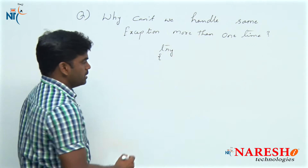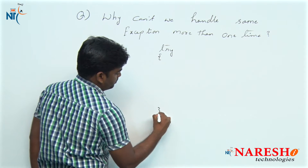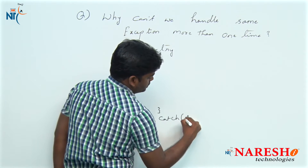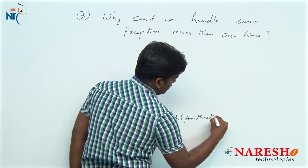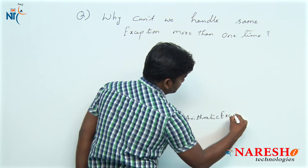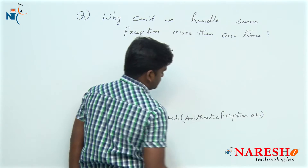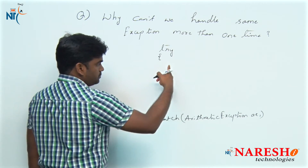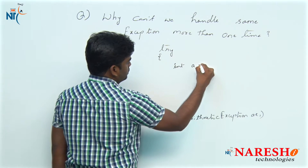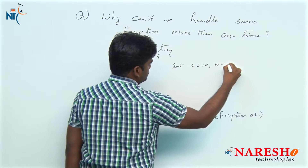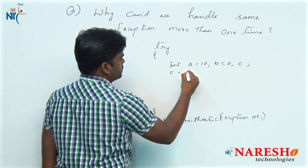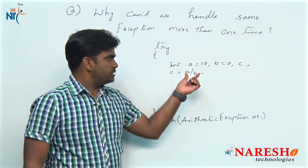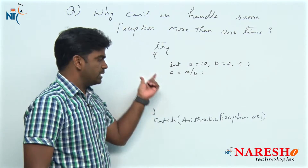For this try block, we are writing two catch blocks. In the first catch block, we are taking ArithmeticException. The related logic we just want to write in the try block — we are declaring int a = 10, b = 0, c = a / b. Whenever we perform a division operation on a and b, there is a chance of getting an ArithmeticException.